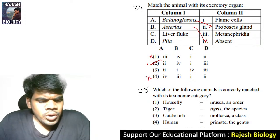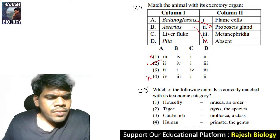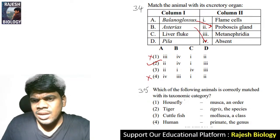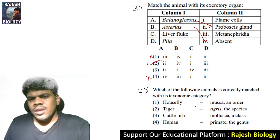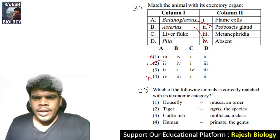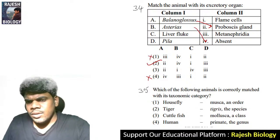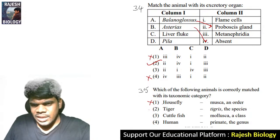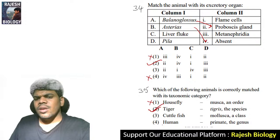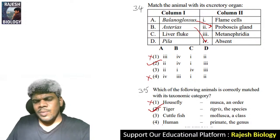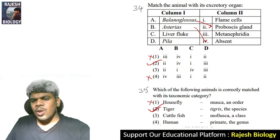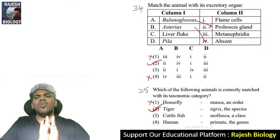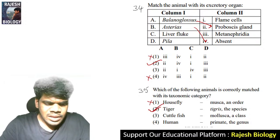Thirty-fifth question: which animal is correctly matched with its taxonomic category? Musca in order — not correct. Tiger — Panthera tigris, species — correct. Cuttlefish — Mollusca, but Mollusca is a phylum not a class. Human — Primate is an order, not a genus. You must know which is order, class, genus, and species.